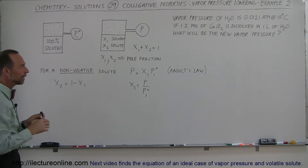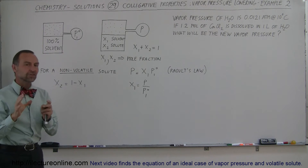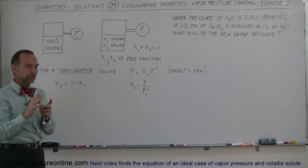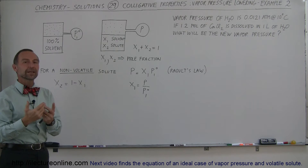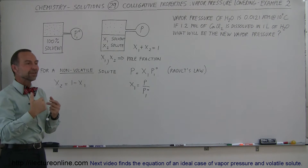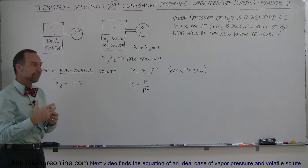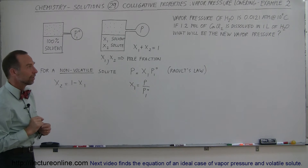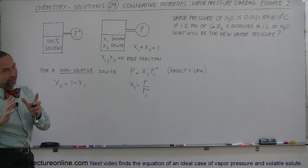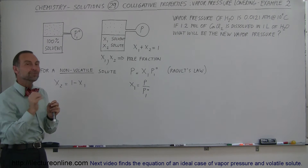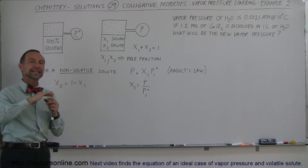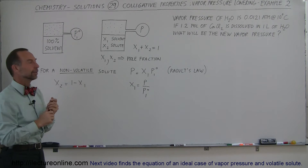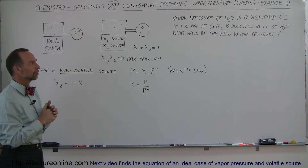What if we add a solute to it? It can be different kinds of solutes. We want it to be a solute that has a low volatility, meaning it does not have any appreciable vapor pressure of its own. A second condition is we don't want to add too much of it, because the relationship is not really linear over the entire concentration.